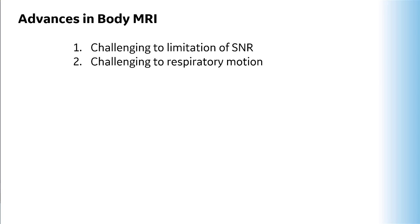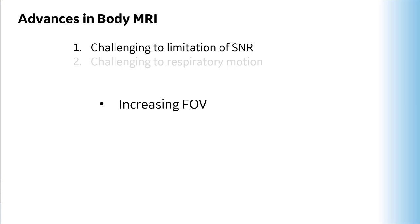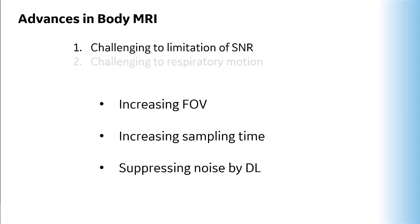My talk today addresses these two topics: one, challenging the limitation of SNR; and two, challenging respiratory motion. We have several ways to get more SNR by changing acquisition parameters. We can improve SNR by increasing FOV, but that reduces spatial resolution — the opposite of our goal. We can improve SNR by increasing sampling time, but that prolongs scan time and worsens respiratory artifact. The third way is deep learning-based reconstruction to suppress noise on the images.